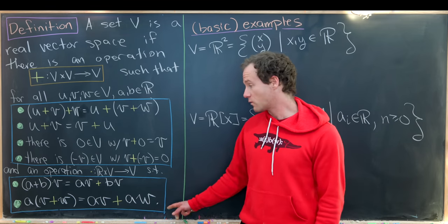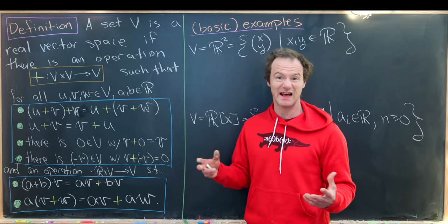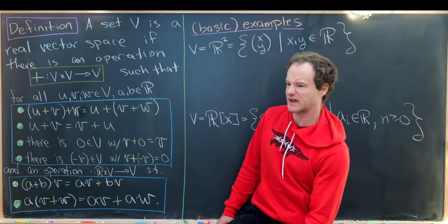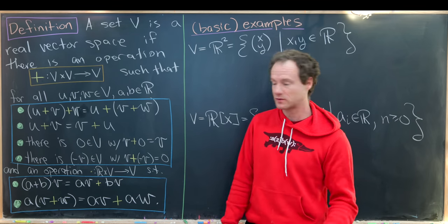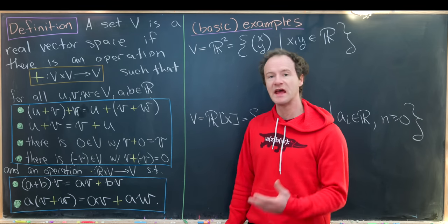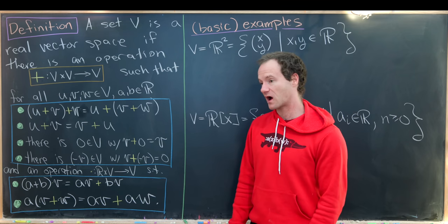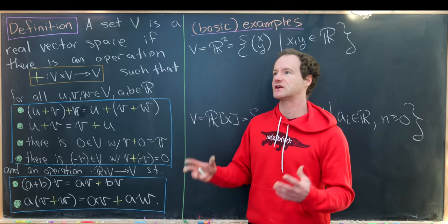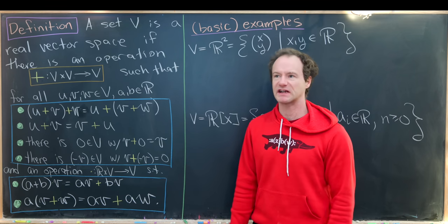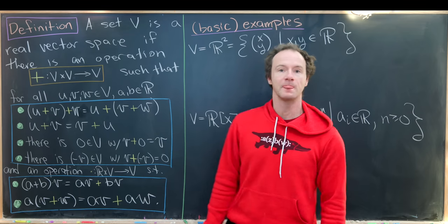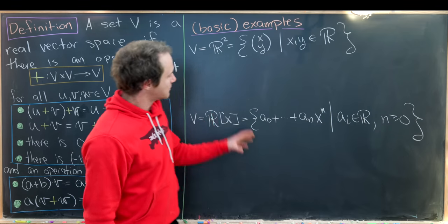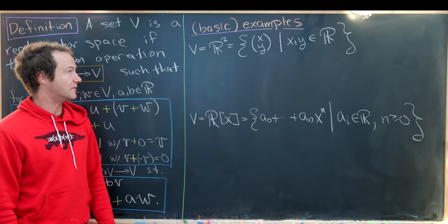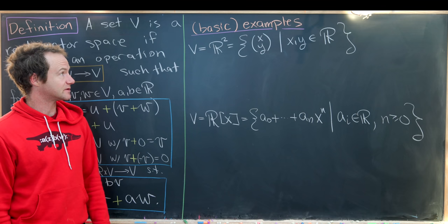Furthermore, there's one more axiom that has to do with the associativity of scalar multiplication with regular multiplication — I'll let you look that up. It's not super necessary to get a grasp of our crazy example, though. So before we look at our crazy example, let's look at a couple of basic examples.